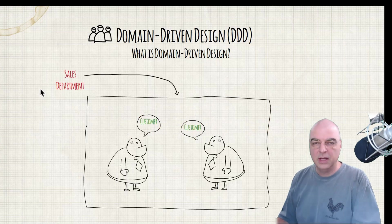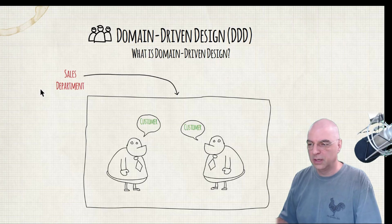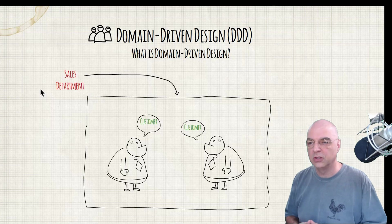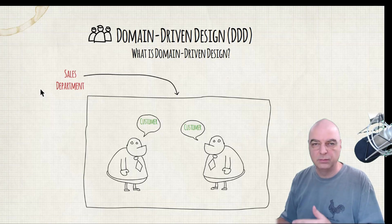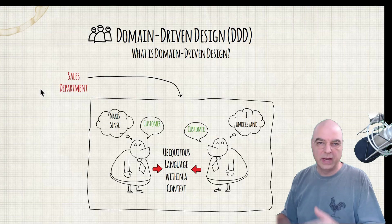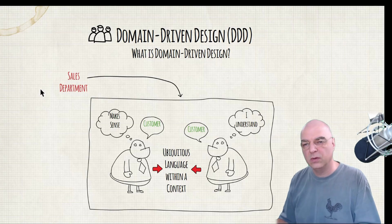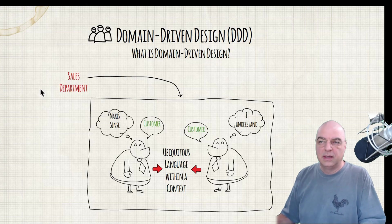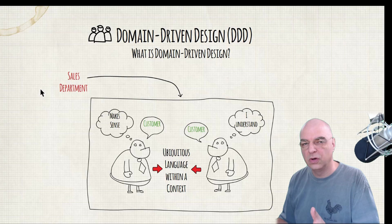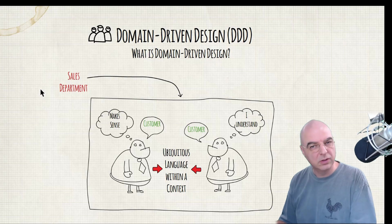As an example, take a typical sales department in a larger organization. In the sales department you have two people communicating about the same concept — in this case, the customer. Within that domain, that communication seems fine; both understand the meaning of what a customer really means within the sales department alone. The reason they understand this is because they're speaking the same language — the ubiquitous language — and they can interpret the meaning of the term 'customer' within that bounded context.